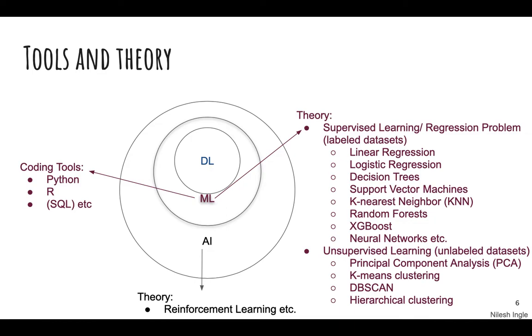There are different methods to treat these problems differently. In case of supervised learning there's linear regression, logistic regression, decision trees, support vector machines, k-nearest neighbor, random forests, XGBoost, neural networks, etc. In unsupervised learning you have principal component analysis, k-means clustering, DBSCAN, hierarchical clustering. If you do not understand these words right now it's completely okay because I will be working through these topics and creating videos in future so that you can learn all these methods.